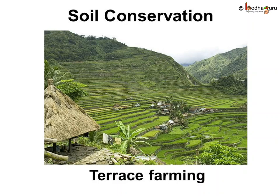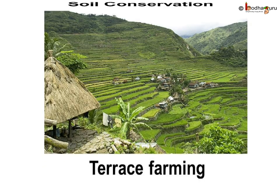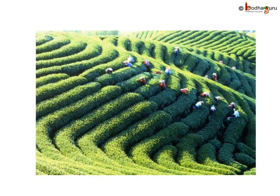Have you seen the tea or coffee plantations in hilly regions? Why are they in the form of stairs? Hill areas are slanting, so rainwater flows very fast, unlike in the plains. As the water flows, it carries the topsoil with it. To avoid this, farming is done in steps. This cutting of steps on the slopes, or terraces, is called terrace farming. It reduces the speed of flowing water, and the soil carried from one step is deposited on the next step, preventing soil erosion.